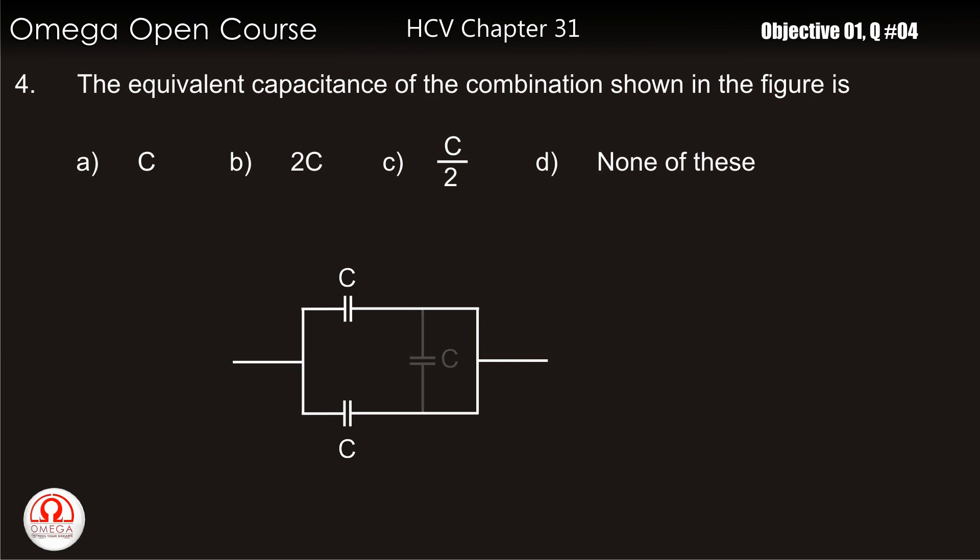So simply remove this capacitor. Now this circuit is a simple circuit with two capacitors connected in parallel. Hence the equivalent capacitance of this circuit is 2C and thus our answer is B.